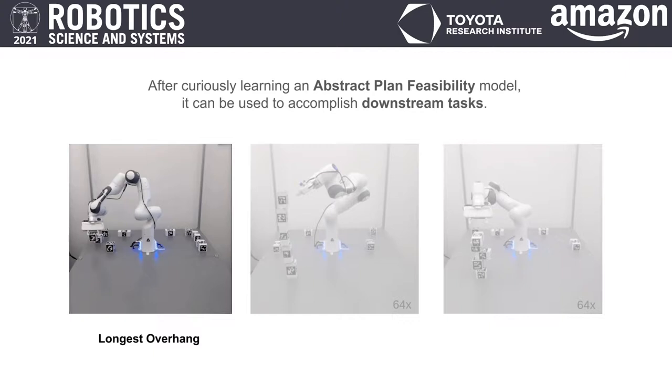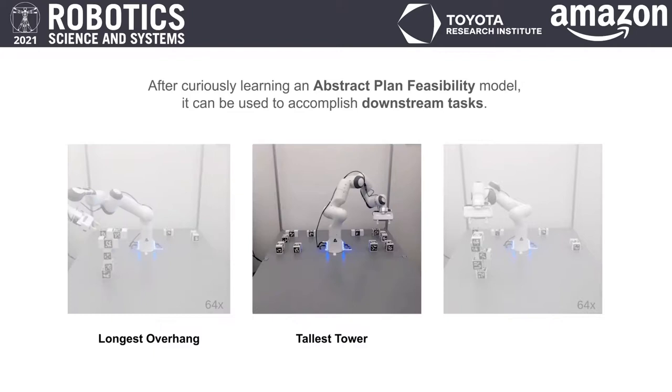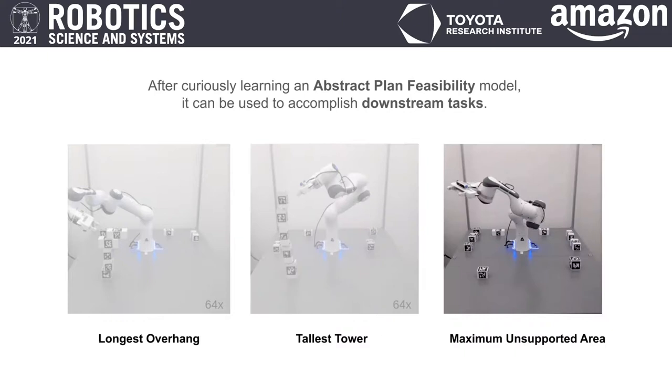The first task is longest overhang, where the edge of the top block should be as far from the tower's base as possible. The tallest tower task simply attempts to build the tower with the greatest height. And finally, the maximum unsupported area task rewards block placements where each block has a large surface area not in contact with the block below.